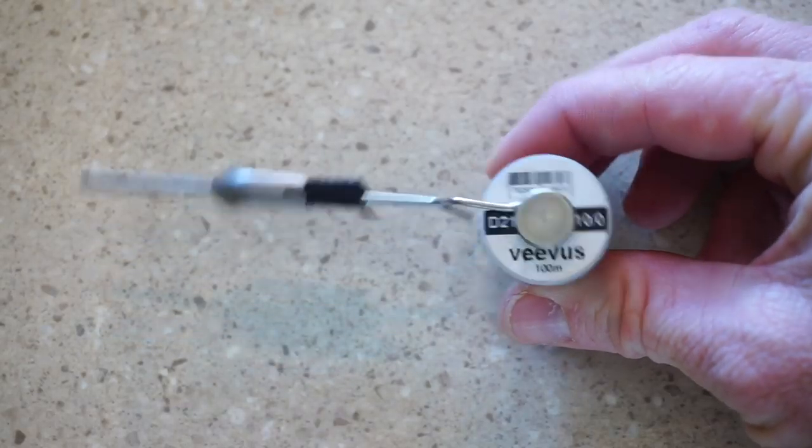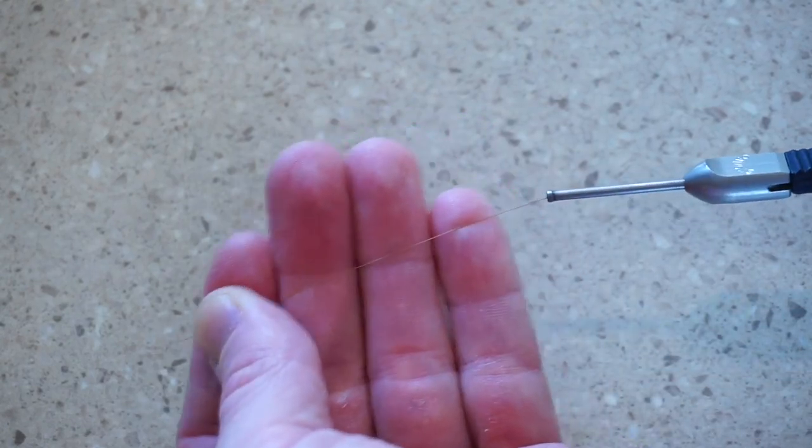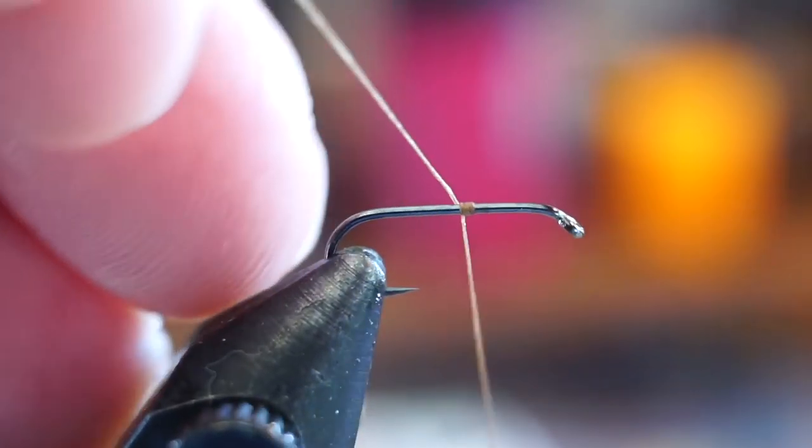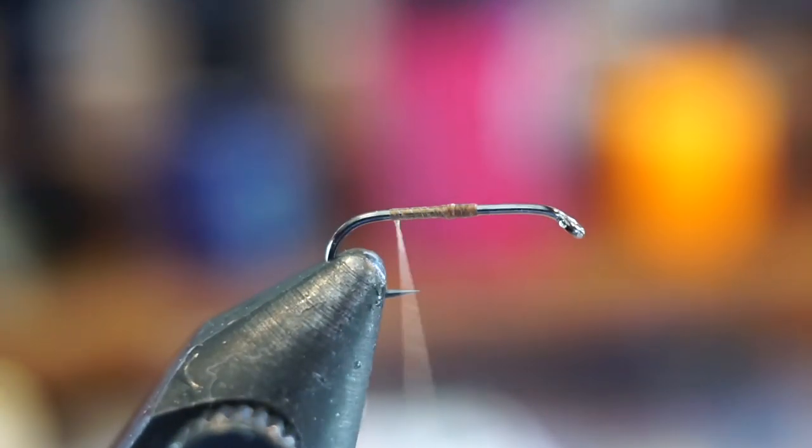For thread, I like this Vivas 10-0 in brown because it's a flat thread and it's super strong for its thickness. Start your thread about halfway down the hook shank and break or trim off the tag end. Then bring your thread back to the bend of the hook.